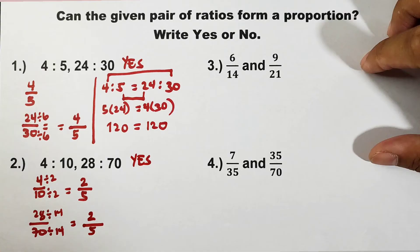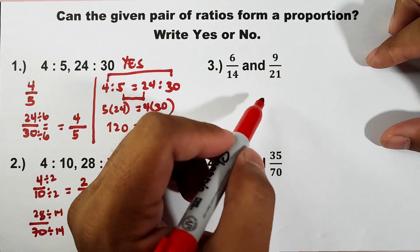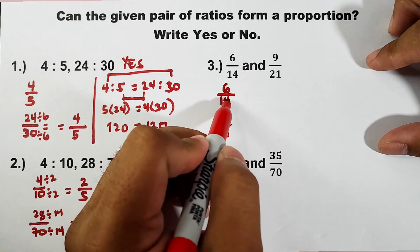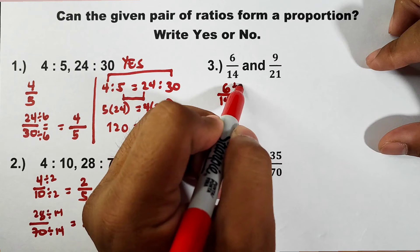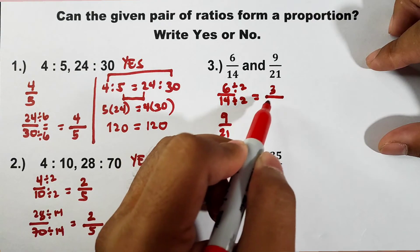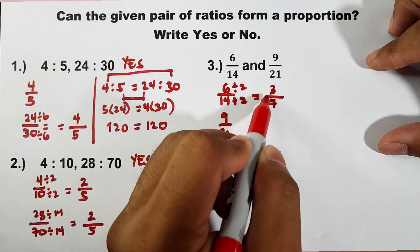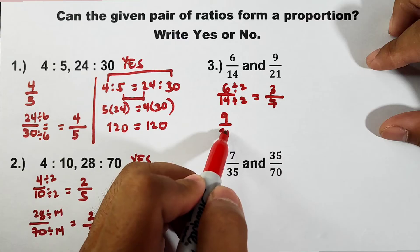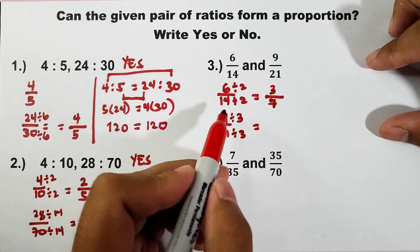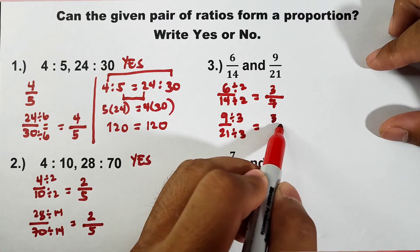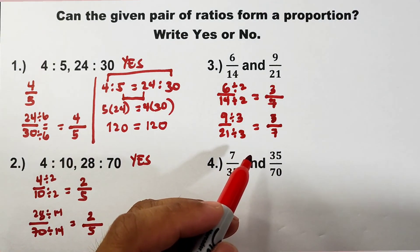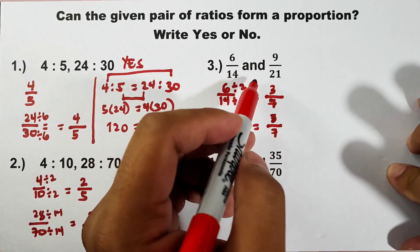For number 3, we have 6 over 14 and 9 over 21. For 6 over 14, the GCF is 2: 6 divided by 2 is 3, and 14 divided by 2 is 7, giving 3 over 7. For 9 over 21, the GCF is 3: 9 divided by 3 is 3, and 21 divided by 3 is 7, giving 3 over 7. The simplified forms are equal, so these two ratios are forming a proportion.